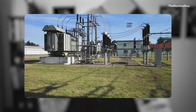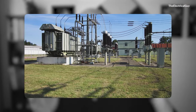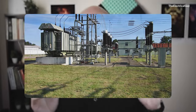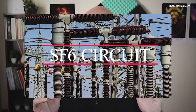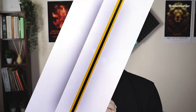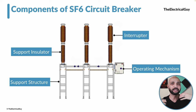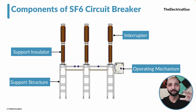All the circuit breakers you will see in high and extra high voltage substations — anything above 52 kV — are SF6 circuit breakers. In this video, let us understand what the different components of an SF6 circuit breaker are. A circuit breaker, in simple language, is a mechanical device which can make, break, and carry normal current and also the rated fault current for a specified time.